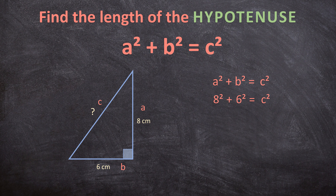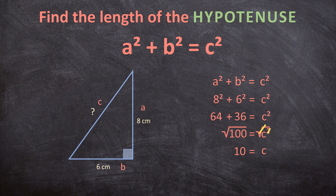What is 8 squared? 8 times 8 is 64. Plus 6 times 6 is 36, and that equals C squared. Adding them together: 64 plus 36 is 100, which equals C squared. To get C, we cancel the square using a square root — the square root of 100 is 10, so C equals 10 centimeters. The hypotenuse is 10 centimeters.